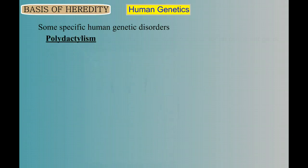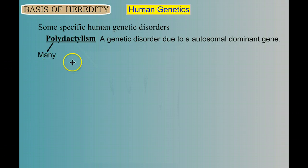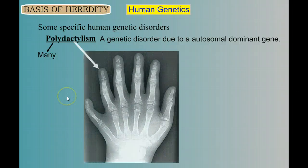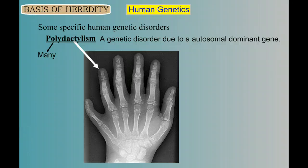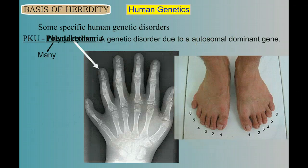Polydactylism is a genetic disorder due to an autosomal dominant gene. Looking at the word: poly means many, and dactyly refers to digits — polydactylism means many digits. It's when you have extra fingers or toes. It's not very common, but it is caused by a dominant gene.